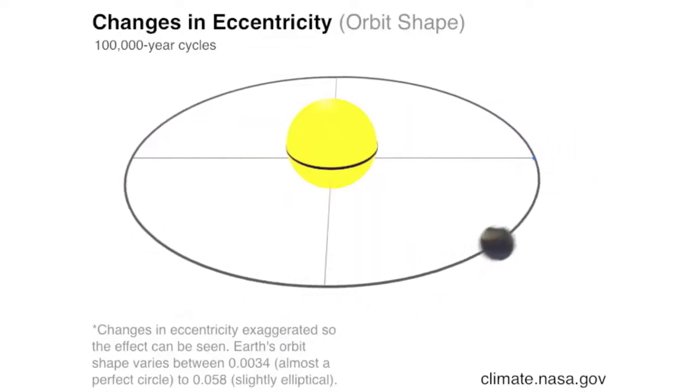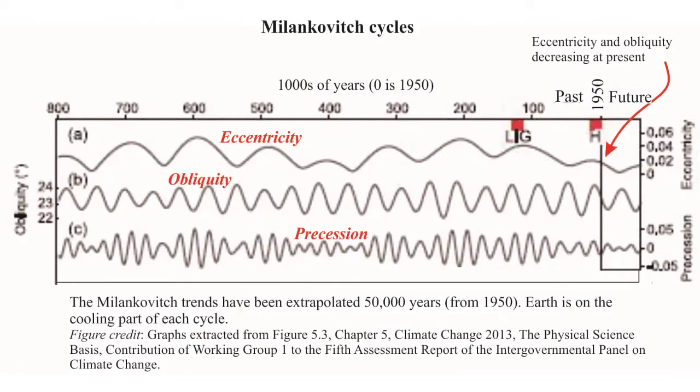People like me who do paleoceanography find that our data very strongly reflects those cycles, because they're really big changes. Sea level changes by 120 meters — just 25,000 years ago, sea level was down that far.